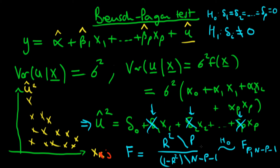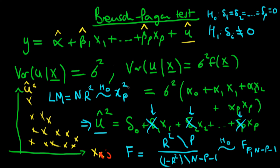The other way to conduct the Breusch-Pagan test is to form the LM statistic: take the number of observations n and multiply it by the R² of the auxiliary regression for û². Under the null hypothesis of homoskedastic errors, this n×R² statistic follows a chi-squared distribution with p degrees of freedom. The intuition is that if the R² of the auxiliary regression is high, it means variations in the residuals are well explained by the independent variables — a strong sign of heteroskedasticity — and a high n×R² will lead to rejection of the null.